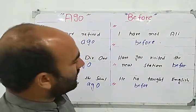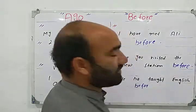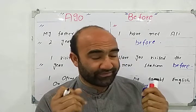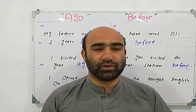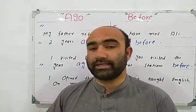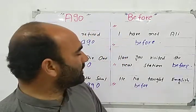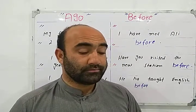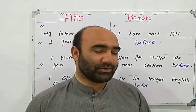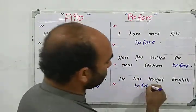The second example: 'Have you visited the new station before?' I'm asking a question here. If you are sure about the exact time, you can use 'ago'. But if you are not sure about when the action happened, then we use 'before'. For example: 'Have you visited the new station before? Yes, I have visited.' Because the time is unspecific, we use 'before'.